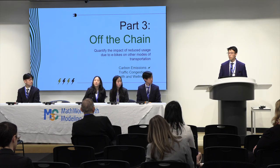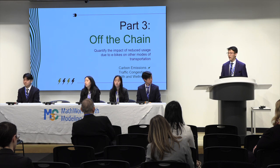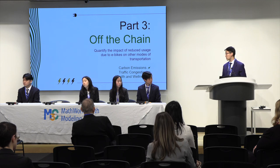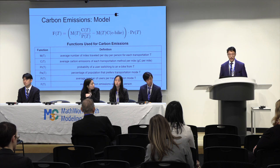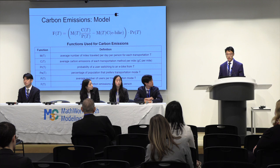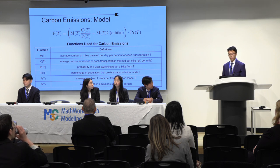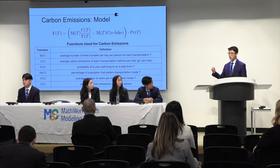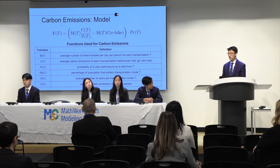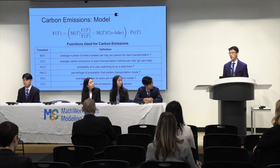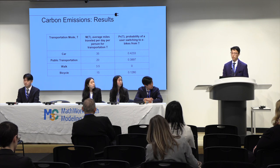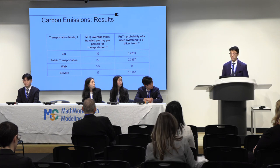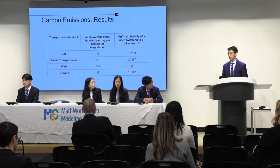In addition to modeling the growth of e-bikes and finding which features are important, we also aim to quantify the impacts of switching to e-bikes on societal factors such as carbon emissions, traffic congestion, and health and wellness. Here's our first model for carbon emissions. F of T denotes the average carbon emissions saved per person when switching from their desired mode of transportation T to an e-bike. The term M of T times C of T over P of T denotes the amount of carbon emissions from their desired mode of transportation. You subtract M of T times C of e-bike, as e-bikes also emit some carbon. This is multiplied by a probability P of T, which is the probability that a person would want to switch from their transportation mode to an e-bike, calculated via cost comparison factors.